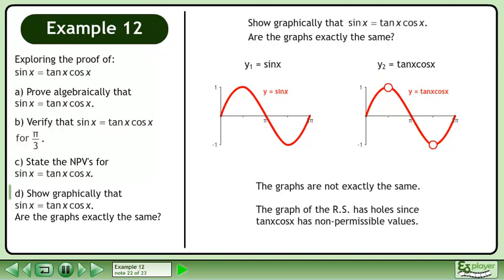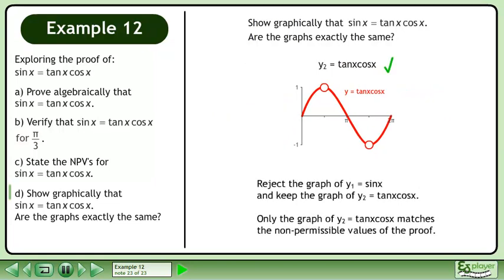The graphs are not exactly the same. The graph of the right side has holes, since tan x times cos x has non-permissible values. Reject the graph of y₁ equals sin x, and keep the graph of y₂ equals tan x cos x. Only the graph of y₂ equals tan x times cos x matches the non-permissible values of the proof.